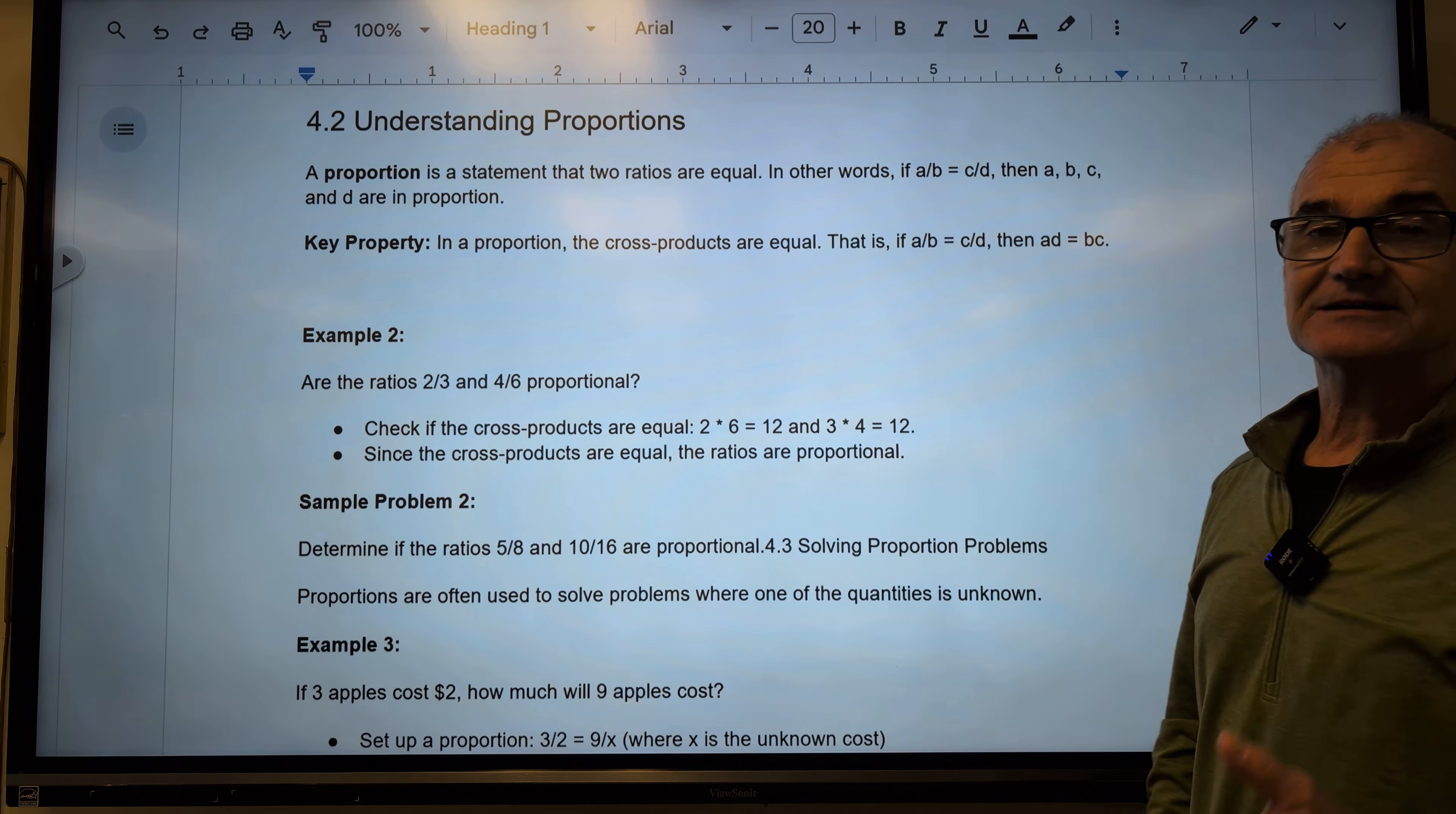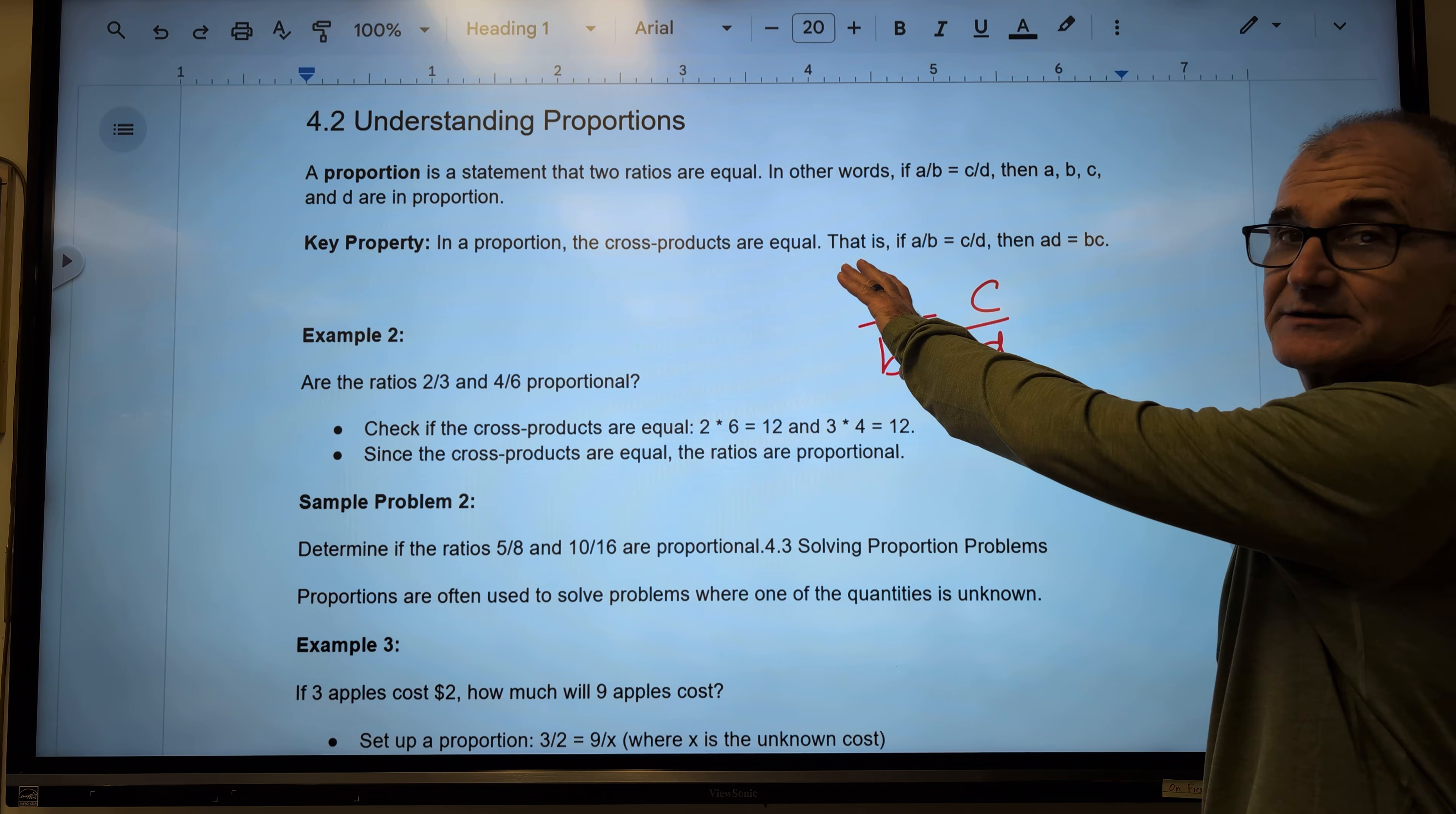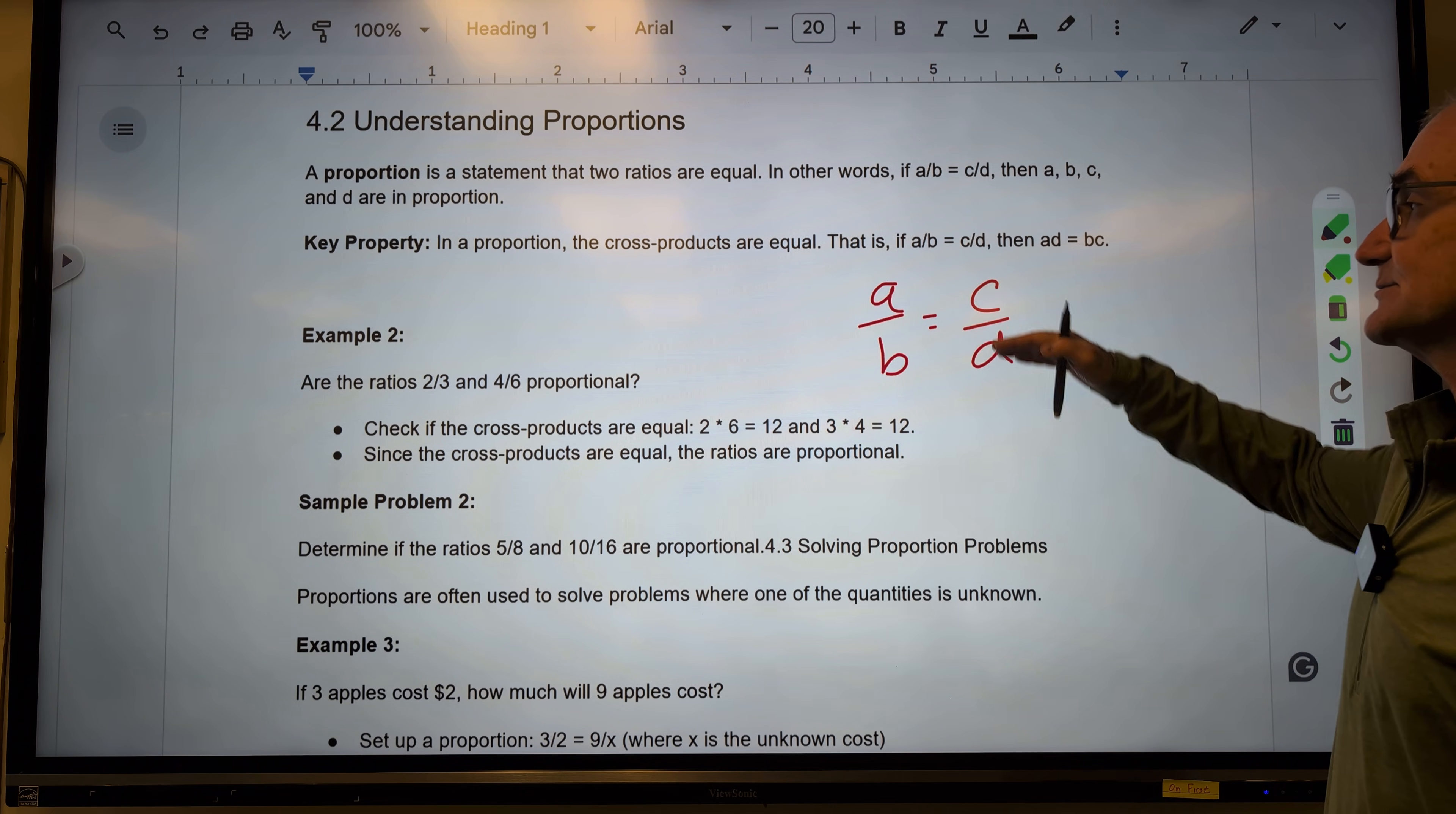Okay, let's take a look at proportions now. A proportion is when you set one ratio equal to another ratio. So if you have A is to B is equal to C to D. Here's a ratio A to B. Here's a ratio C to D. I set those ratios equal and that's what a proportion is. And that means A is proportional to B as C is proportional to D.